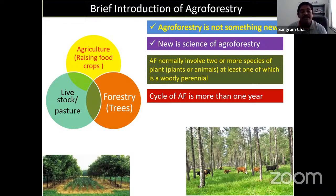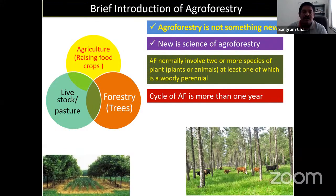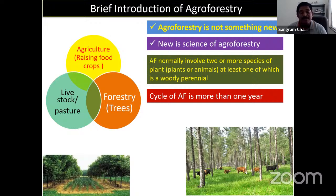Scientifically, agroforestry emerged in 1977. The CGIAR system formulated the World Agroforestry Center, also known as the International Center for Research on Agroforestry (ICRAF). It is located in Nairobi, Kenya, and the center emerged in 1977, after which agroforestry science started running.